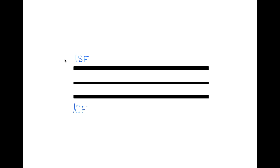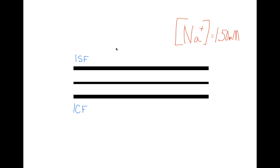So here is our hypothetical cell, and our hypothetical cell has two fluid compartments. The first is the intracellular fluid, or the ICF, and the second is the interstitial fluid, or the ISF. The ISF is present outside the cell, and the ICF is present inside the cell. Outside the cell, we have a sodium concentration of around 150 millimolar, and inside the cell, the sodium concentration is much smaller, at around 15 millimolar.